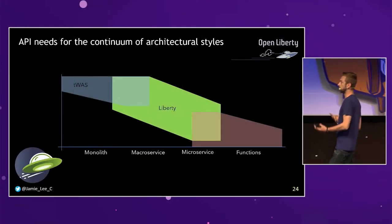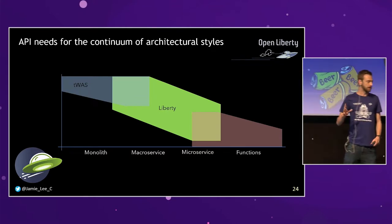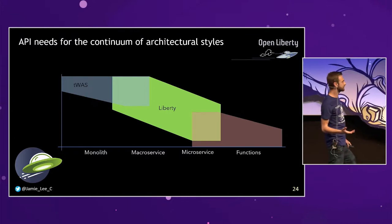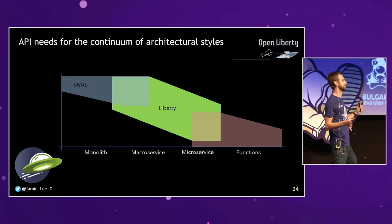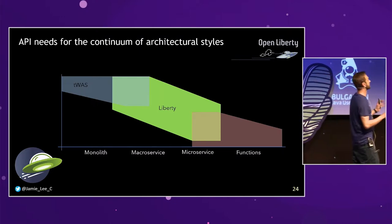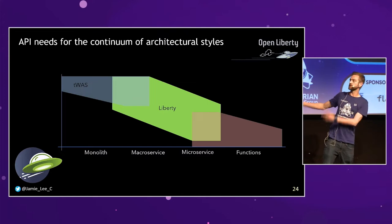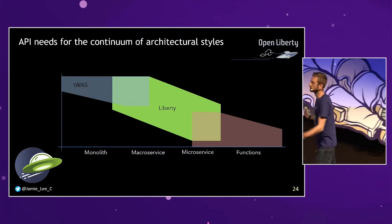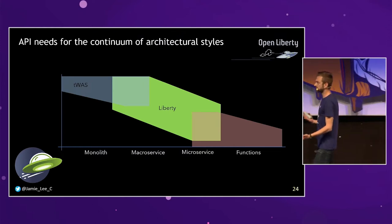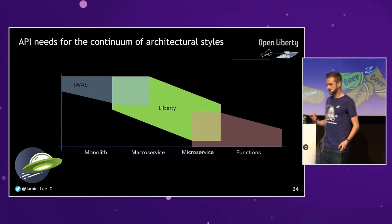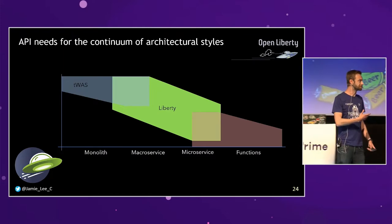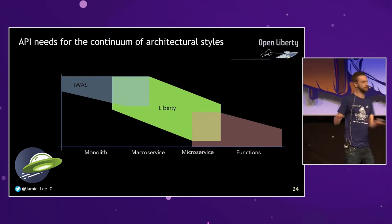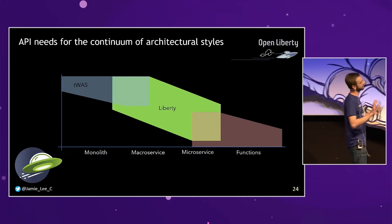This is kind of where Open Liberty fits in. Traditional WebSphere is great for monoliths, but Open Liberty fits in the bubble where it has all the functionality of traditional WebSphere and works really well with microservices. I wouldn't use it as a function as a service — Open Liberty is meant for running longer than ten minutes. If I was going to use function as a service, I'd probably use Quarkus. But Open Liberty fits this middle ground well, from monolith and macro service down to microservice architecture.